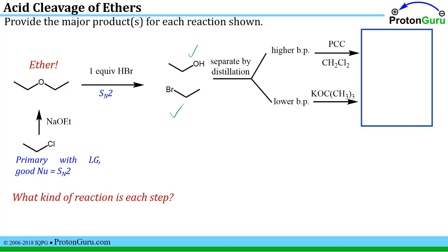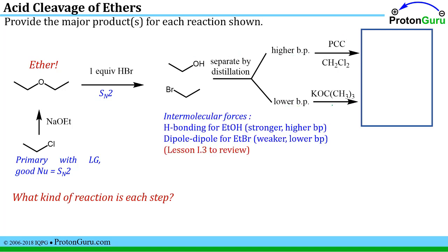Now this next part of our reaction string says we need to separate these two by distillation. We'll take the higher boiling point one up here and do this reaction, and take the lower boiling point down here and do this reaction. Remember that the boiling points are dictated by what type of intermolecular forces are present for similarly sized molecules. So there's hydrogen bonding in ethanol, this molecule, and hydrogen bonding is the stronger of the intermolecular forces compared to the dipole-dipole interactions that are present in a sample of ethyl bromide. Stronger intermolecular forces, higher boiling point. So it's the ethanol that we're going to carry through for this step. It's the ethyl bromide that's going to carry through for this bottom reaction.